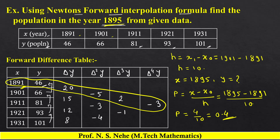Table में से हम जो values consider करेंगे: y₀ = 46, Δy₀ = 20, Δ²y₀ = minus 5, Δ³y₀ = 2, and Δ⁴y₀ = minus 3. अब हम Newton's forward interpolation formula apply करेंगे।